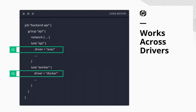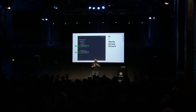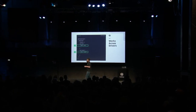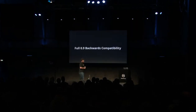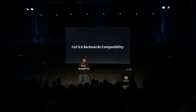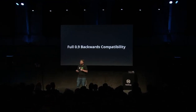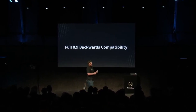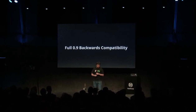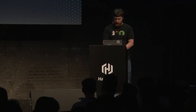We also support shared networking namespace across drivers. You can have a Docker task and an exec task in the same task group and they will still share the same networking namespace, which is really exciting. We also want to support full backwards compatibility with 0.9 — bring your job spec from 0.9, launch it in 0.10, and it will operate exactly the same. All of these new features are opt-in. Let's do a quick demo.